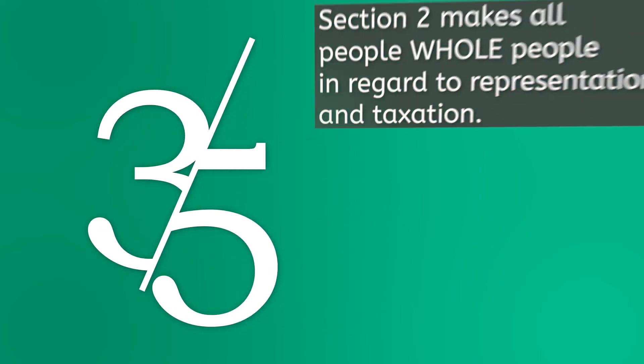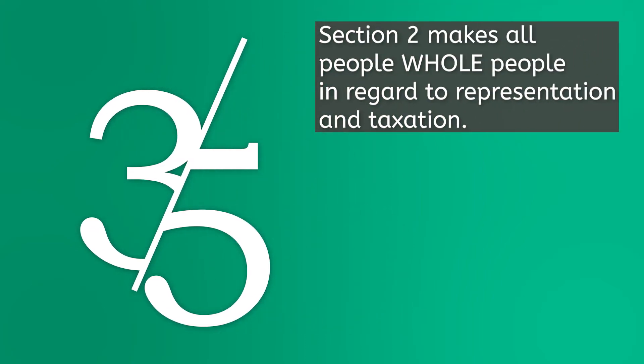Section 2 put an end to the Three-Fifths Compromise. If you remember from Unit 2, the Three-Fifths Compromise counted enslaved persons as three-fifths of a person. Section 2 makes all people whole people in regard to representation and taxation.